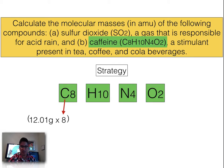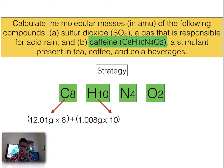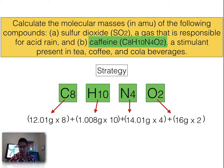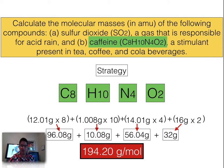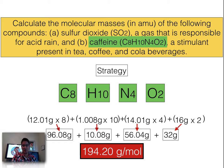I have 8 carbons, each carbon is 12.01 grams, multiplied by 8. Hydrogen's molar mass is 1.008 grams, multiplied by 10 because there are 10 hydrogens in caffeine. I do the same for nitrogen — you can see its mass, multiplied by 4 — and then oxygen. Once I find the molar mass of each combined element, I add them all together and get a combined mass of 194.2 grams per mole. That's one mole — 6.02×10²³ molecules — of caffeine.